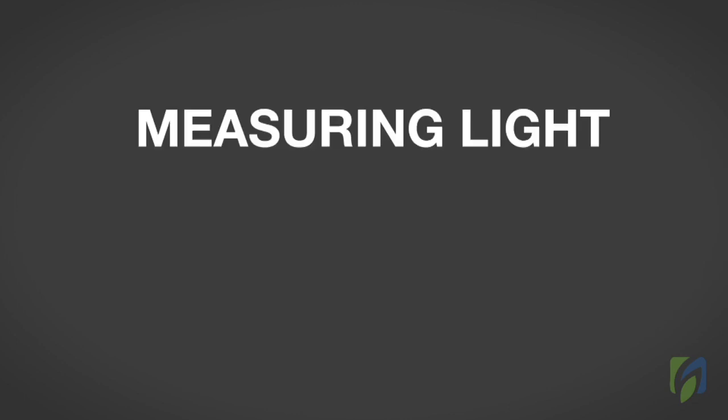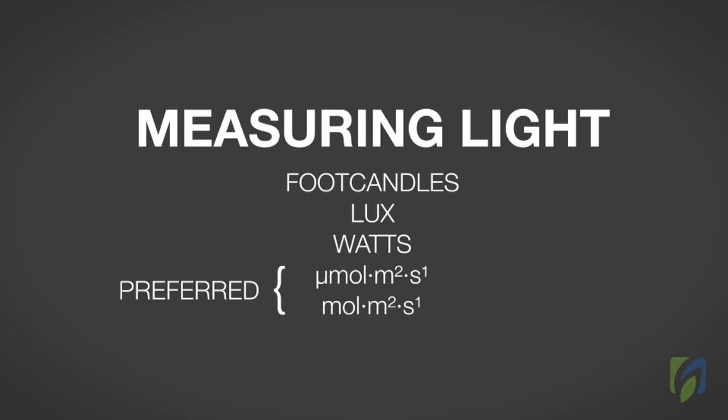Light quantity can be measured in different units, including foot candles, lux, watts, micromoles per meter squared per second, and moles per meter squared per day. Micromoles and moles are the preferred units of measure for plant production because it quantifies the capacity of plants to perform photosynthesis on an instantaneous and daily basis, respectively.